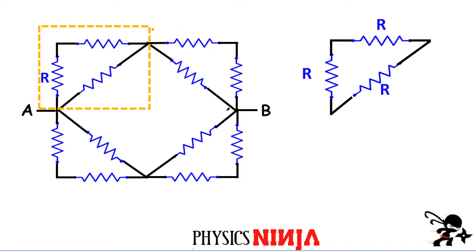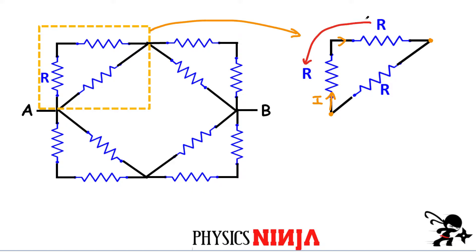Let's just look at this area over here, which I've represented on the right-hand side. We have a point over here and a point over here. Looking at this top branch, imagine there is a current flowing in this direction. That current I would have to flow through this resistor, and then once it reaches the top, it's going to continue and flow through the second resistor. So both of these resistors here have to be in series with each other.